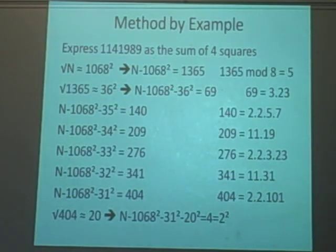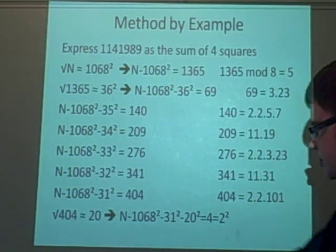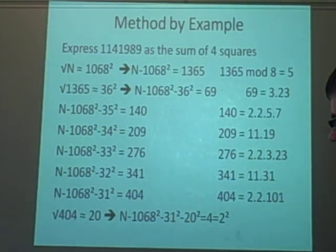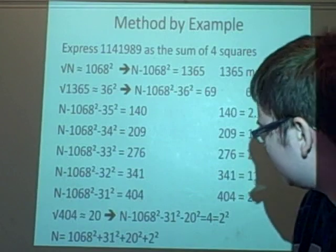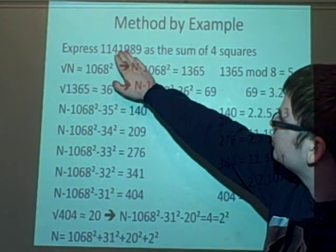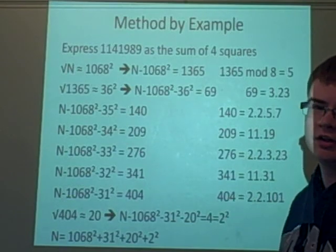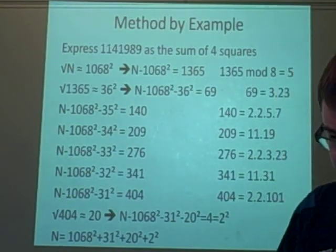Now we've got our solution. So we've got our 1068², 31², 20², and 2². And if you add them all together, then you will get 1,141,989, which is my girlfriend's birthday. I hope you enjoyed that.